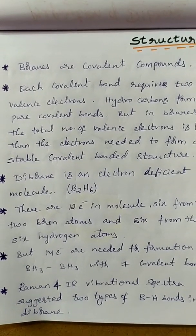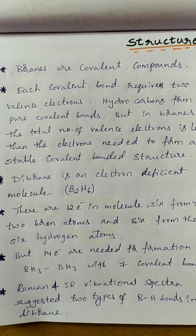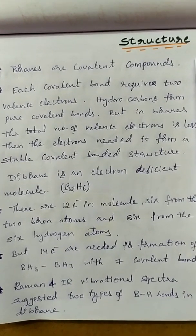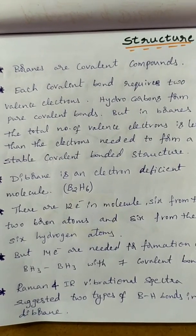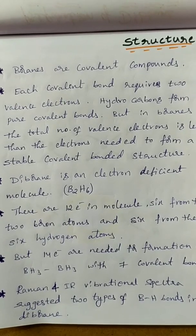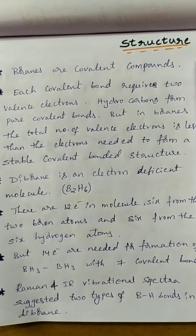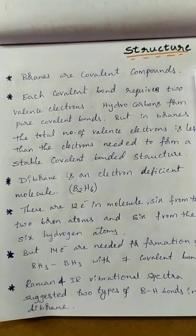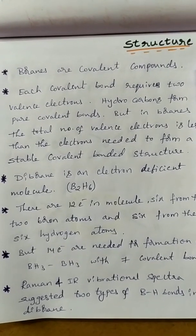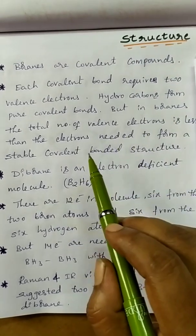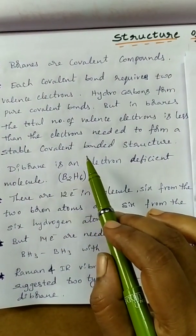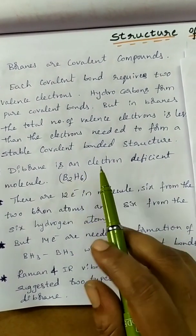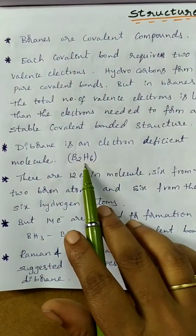Borons form covalent compounds. We know a covalent bond is formed in B2H6, and each covalent bond requires 2 electrons — sharing of electrons means a covalent bond. Hydrocarbons form pure covalent bonds, but B2H6 does not have sufficient valence electrons to form normal covalent bonds. The electrons available are less than those needed to form a stable covalent bond structure. So Diborane is an electron deficient molecule.